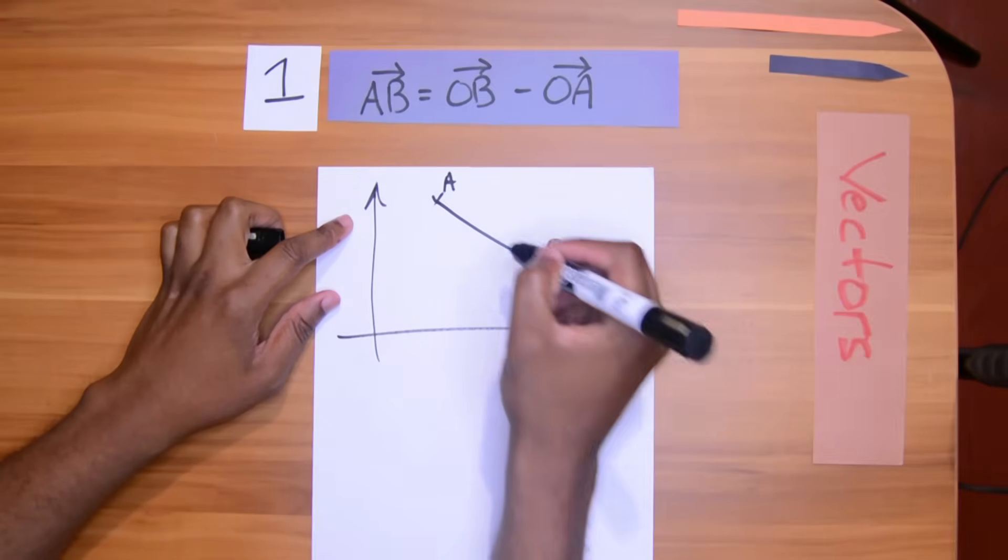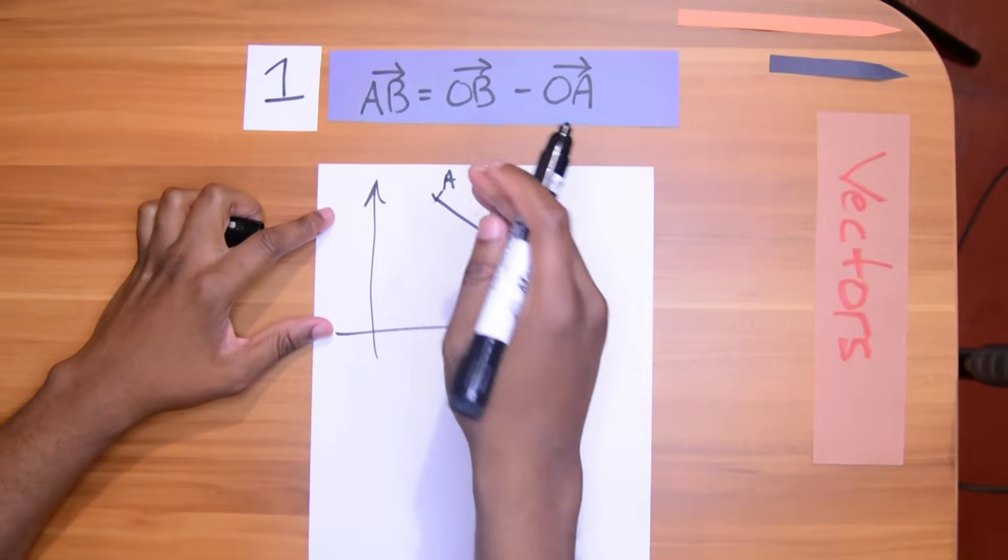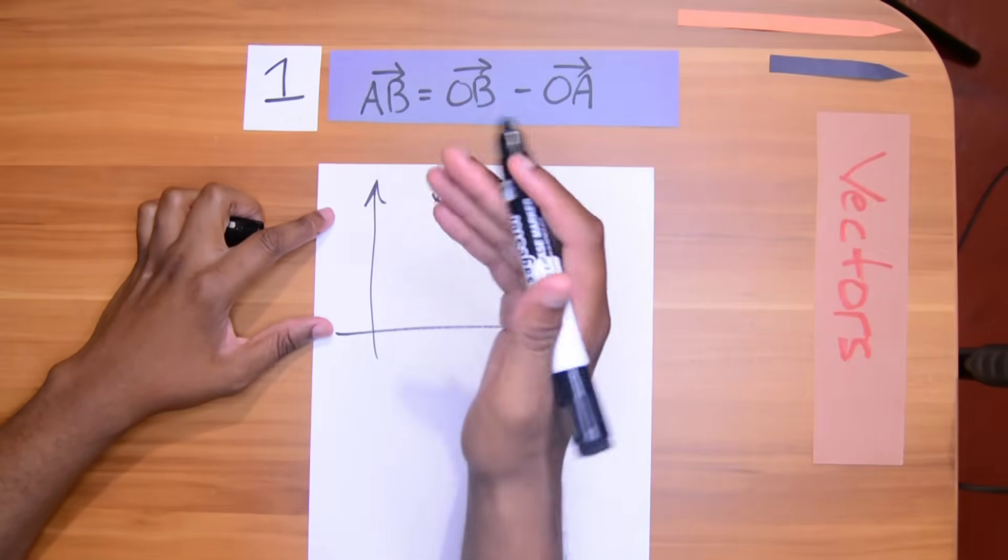And I want to know vector AB but I don't know vector AB. How would I be able to find out vector AB? I will use the triangle law.